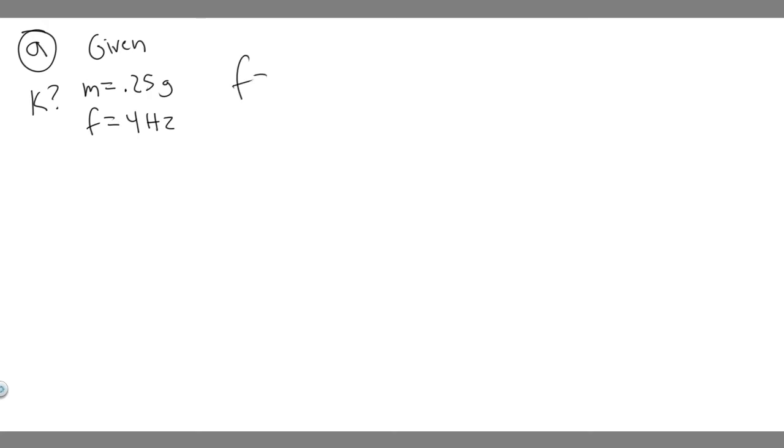You might assume Hooke's law, which is f equals kx, but this is force and this is distance. We don't have either of those. So there's got to be some other formula. Luckily there's a formula that relates all these, which is frequency equals 1 over 2π multiplied by the square root of k over m. We have all these variables: the frequency, the mass, and we should be able to solve for the spring constant k.